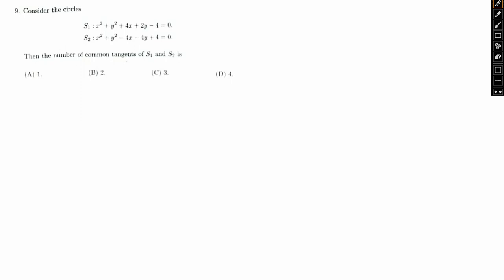So here, consider the circles S1: x squared plus y squared plus 4x plus 2y minus 4 equal to 0 and S2: x squared plus y squared minus 4x minus 4y plus 4 equal to 0. Then the number of common tangents of S1 and S2 are. So let's take a look.